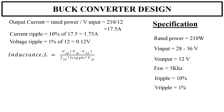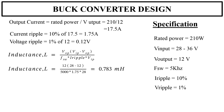The value of inductance is given by: L equals V_output times (V_input minus V_output), all divided by (F_sw times current ripple times V_input). That is L equals 12 times (28 minus 12), all divided by (5000 times 1.75 times 28), which equals 0.783 millihenry.